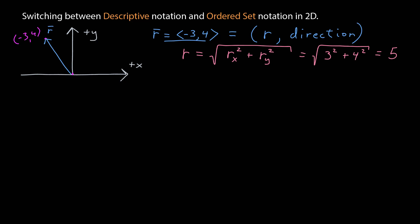I can calculate that. The square root of 3 squared plus 4 squared is equal to 5.